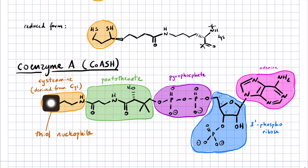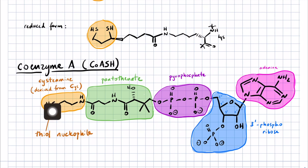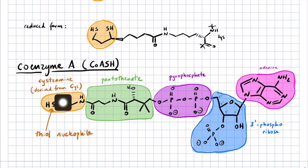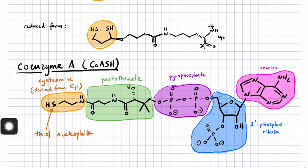The business end of the molecule is cysteamine, derived from the amino acid cysteine, and the big important part is this thiol nucleophile. You can think of coenzyme A as a nucleophile with a big handle — the enzyme uses the handle to get the nucleophile to where it needs to be.